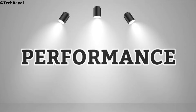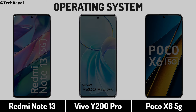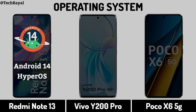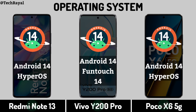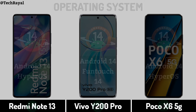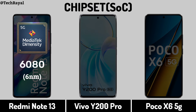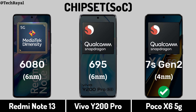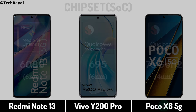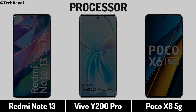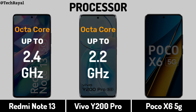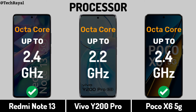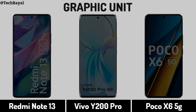Now for Performance: Operating System, Chipset, Processor, and Graphic Unit.